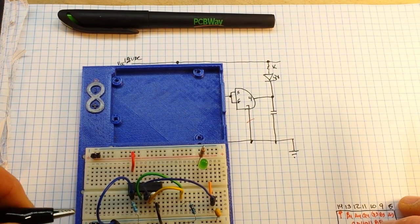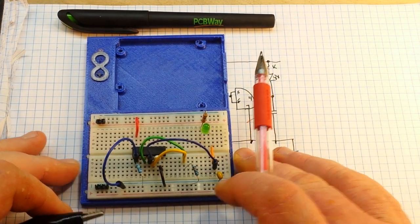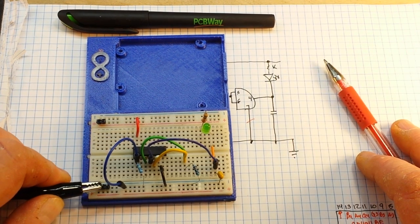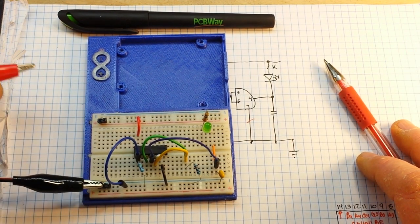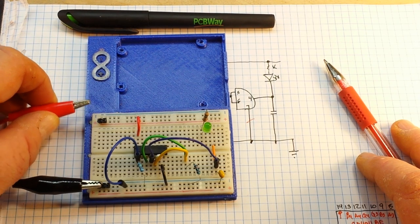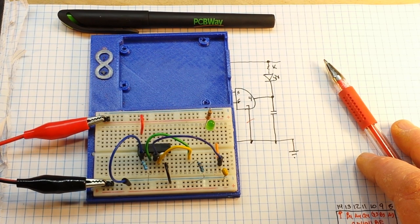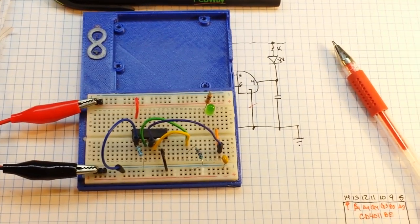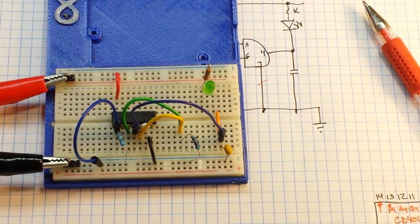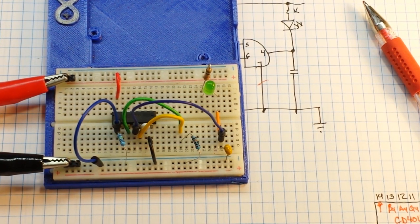Okay, so next we'll hook everything up. Always hook up my grounds first. And when we power it up we should get a nice blinking LED. There we go.